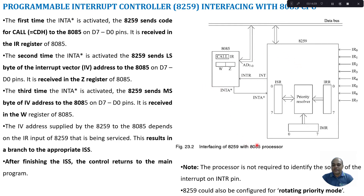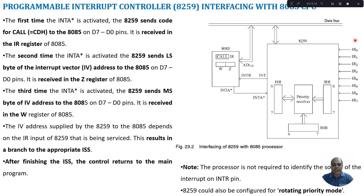The 8259 can also be configured in a rotating priority mode, which works like a cyclic priority. First IR0 will be serviced, then IR1, IR2, and so on up to IR7, and then it cycles back to IR0. Initially in 8085 we have only one INTR pin, but now this one pin is connected to eight interrupt lines through the 8259, thereby increasing the interrupt handling capability of the microprocessor.